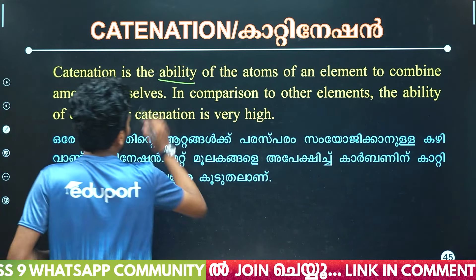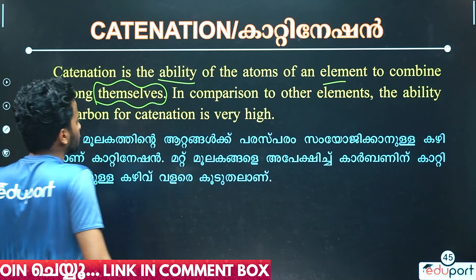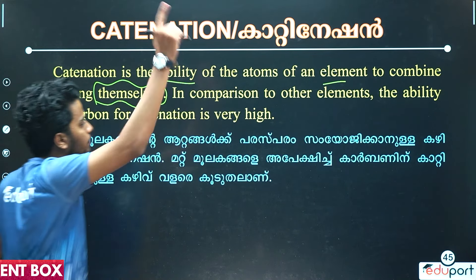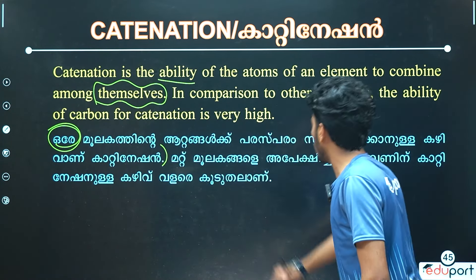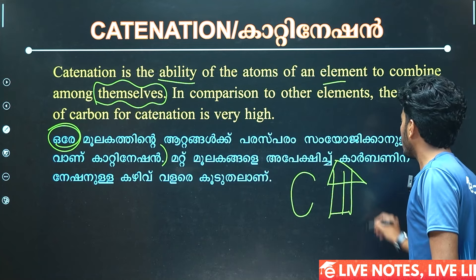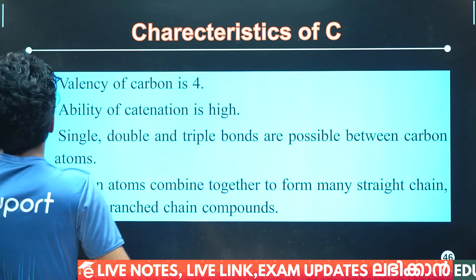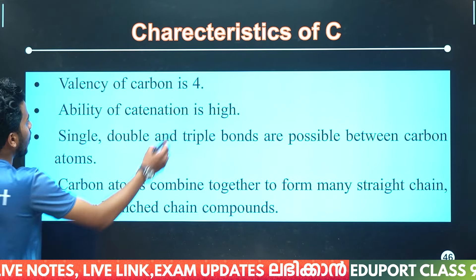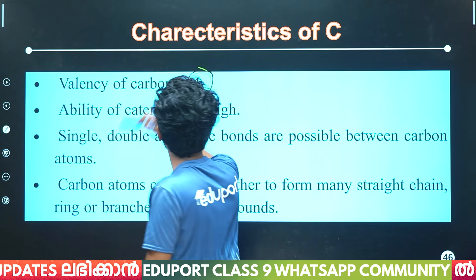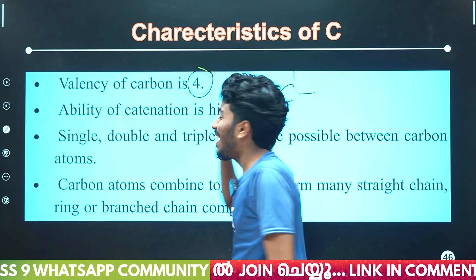Well, that's an ability of the atom of an element to combine among themselves — parasparam — meaning carbon combining with carbon itself. This is the catenation of carbon. Valency is 4. The valency of carbon is 4.